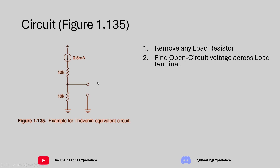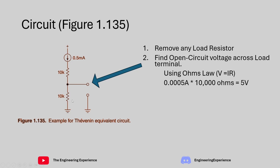This open circuit voltage is also called the Thevenin voltage. In this case, we can find it quite simply using Ohm's law. We have a current source of 0.5 milliamps, so we know that 0.5 milliamps is going to go down this path. So 0.5 milliamps across a 10k resistor gives us 5 volts. So VOC, or the open circuit voltage, is 5 volts.